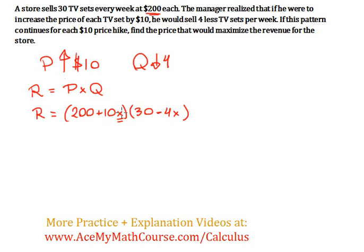For each $10 price increase, if x were to be 1 here, we would get $210 for the price, and the quantity, the new quantity, would be 26. Right, because the quantity would fall by 4 units, 4 less people would buy TVs.